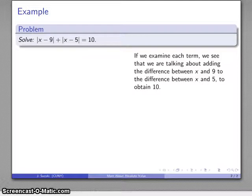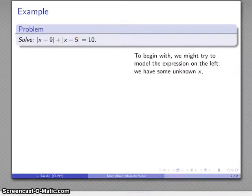So let's take this equation apart. We see that we're adding two different things: the difference between x and 9 and the difference between x and 5. When we put these two things together, what we get is 10. So let's see if we can draw a picture of that.